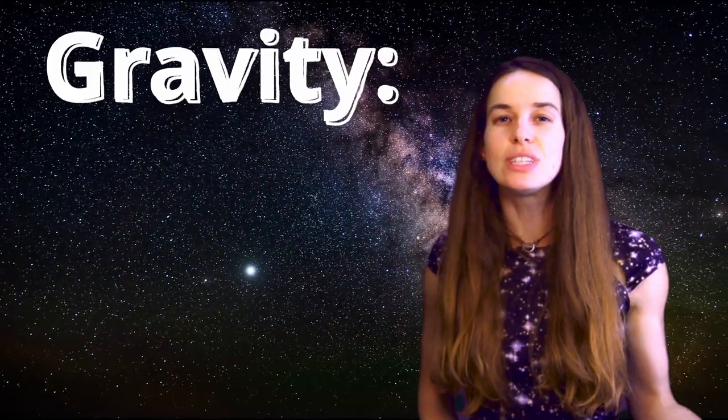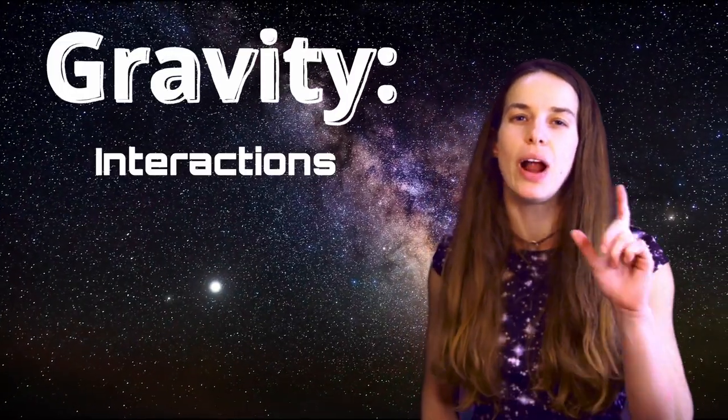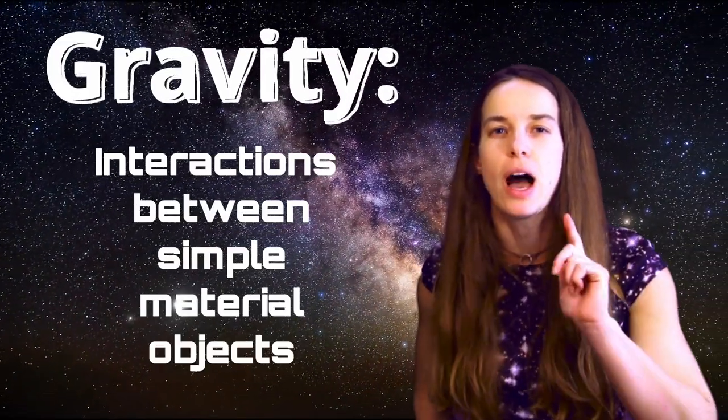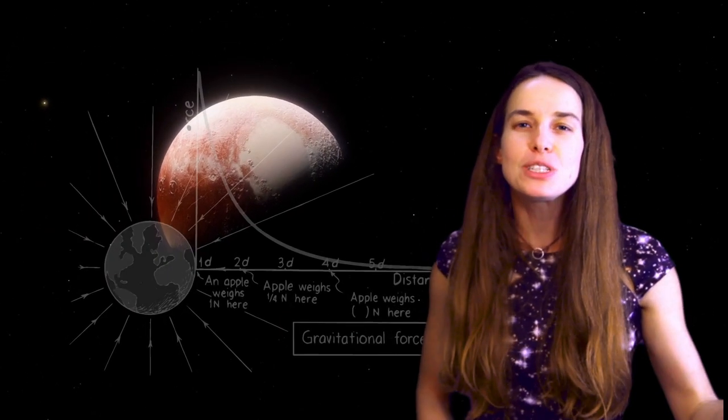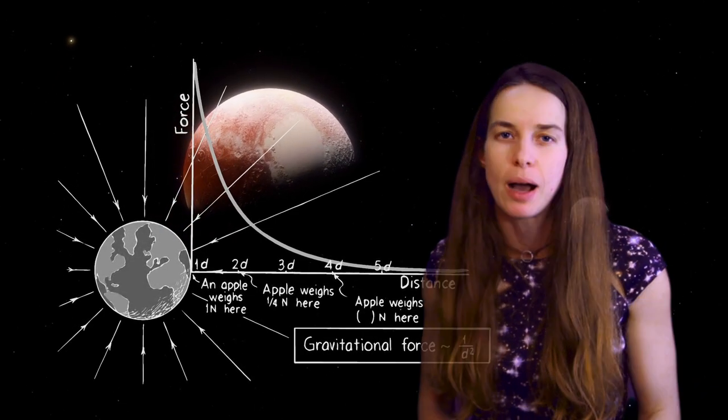By the end of this video, you will understand that gravity, like the rest of physical nature, can be clearly explained through interactions between simple material objects. Even better, you will finally understand why, as Newton famously related, the force of gravity falls off with a square of the distance between objects.